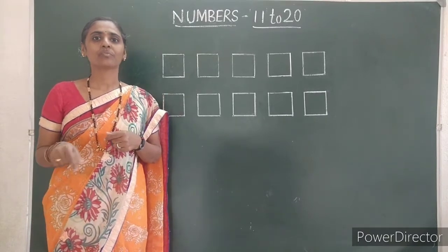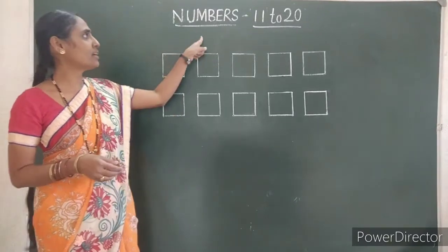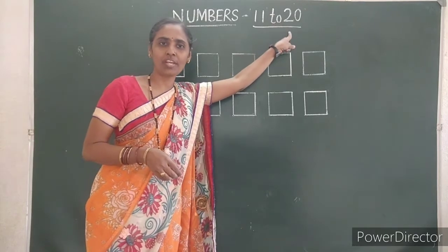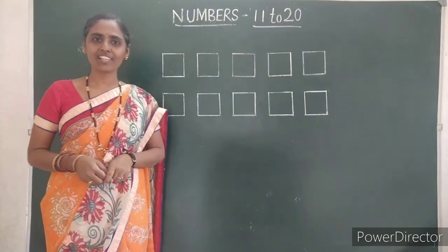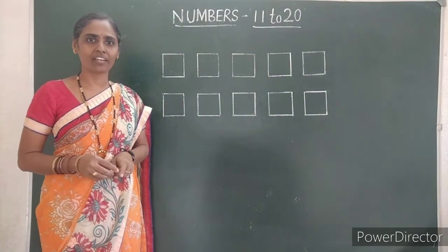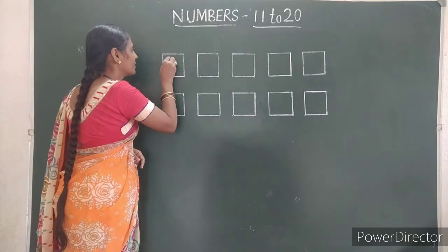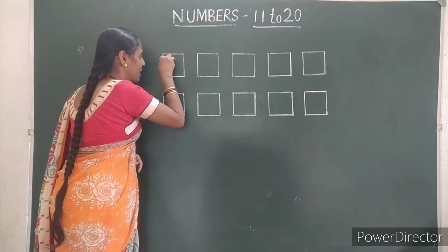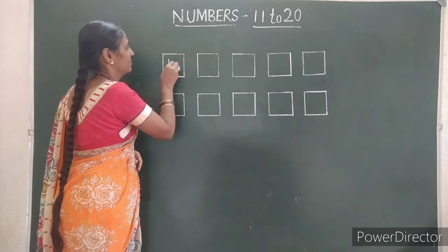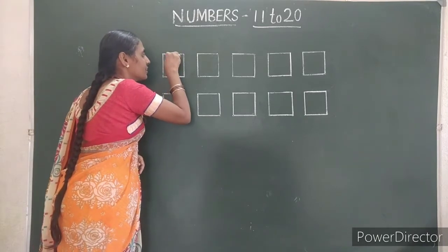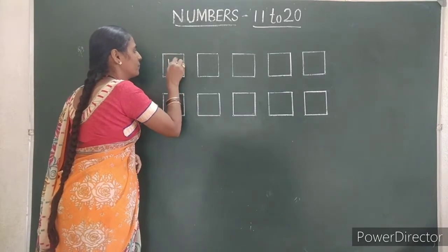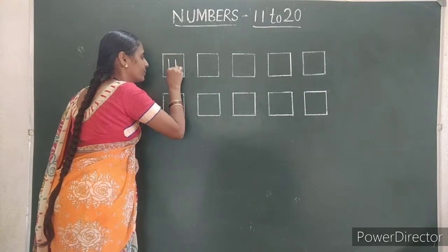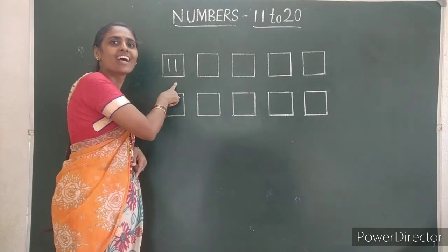Now, we will learn the numbers 11 to 20. The first number is 11. First, write 1. Then, write another 1. It's 11.